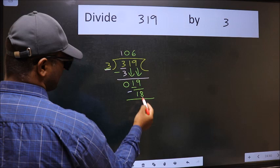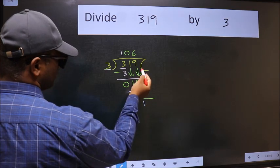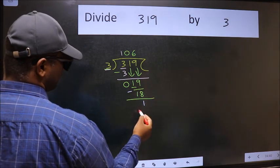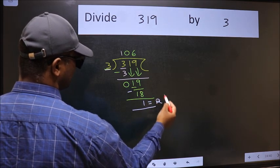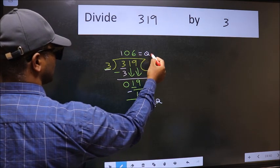Now we should subtract. We get 1. No more numbers to bring it down. So this is where we stop. This is our remainder and this is our quotient.